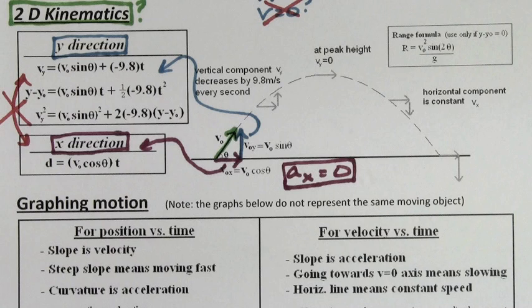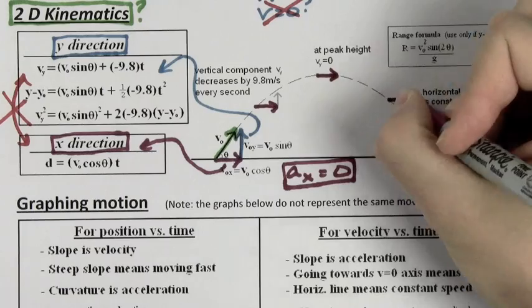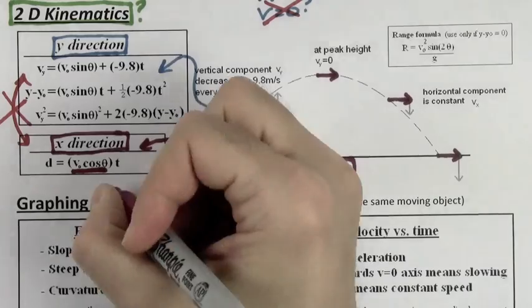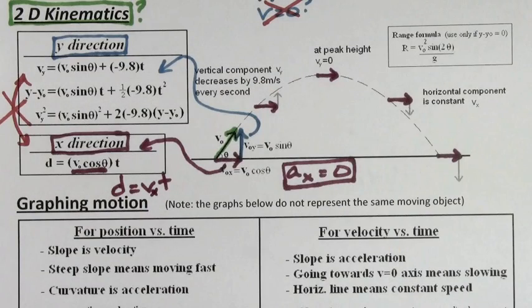In the X direction, the horizontal acceleration is zero. It's always zero for a projectile. That means the horizontal velocity stays the same the whole way. VX is constant. So don't use kinematic formulas for the X-directed component in 2D kinematics. Only use distance equals velocity in the X direction times time.